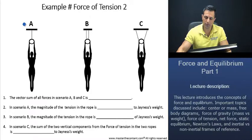Okay, we have three different scenarios here, Scenario A, Scenario B, Scenario C. Scenario A, Janus is hanging from a single rope. Scenario B is hanging from two ropes, and Scenario C, they're angled. Wonderful. The vector sum of all forces in Scenario A, B, and C is going to be what?